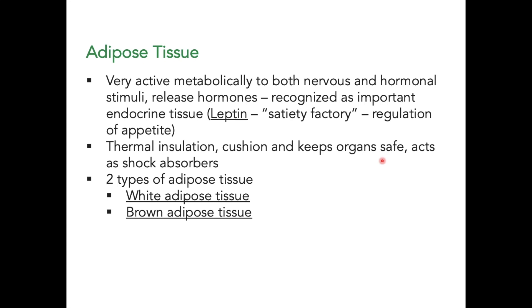For example, the peri-renal fat protects and cushions the organs and acts as a shock absorber. Adipose tissue is also protective especially in blunt trauma — it absorbs shock before the organs are eventually damaged.